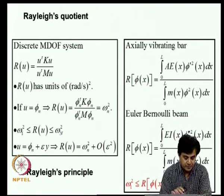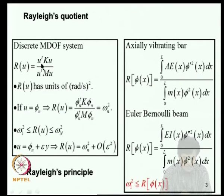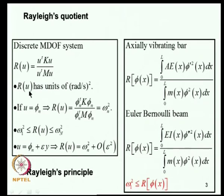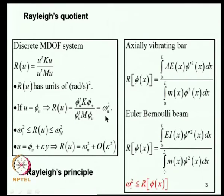During previous lectures we introduced Rayleigh's quotient. For a discrete multi-degree-of-freedom system, if U is an N×1 vector where N is the degree of freedom, Rayleigh's quotient is given by U-transpose K U divided by U-transpose M U. This quantity has units of radians per second squared. If this vector U coincides with the Nth eigenvector of the system, then Rayleigh's quotient becomes exactly equal to the Nth natural frequency squared — the Nth eigenvalue.